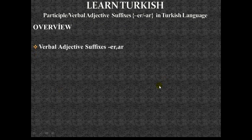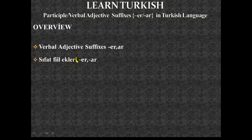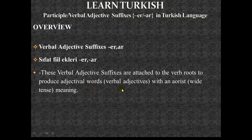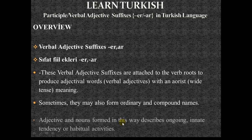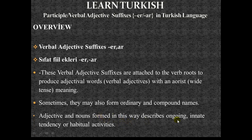The main topic of this session is the verbal adjective suffixes -er and -ar. These are named as 'sıfat fiil ekleri' in Turkish. These verbal adjective suffixes are attached to verb roots to produce adjectival words — that is, verbal adjectives with an aorist, or present tense meaning. They may also form ordinary and compound nouns. Adjectives and nouns formed in this way describe ongoing, innate tendency, or habitual activities.